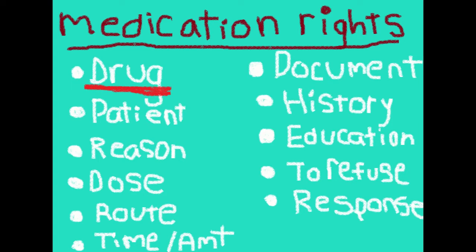The right patient. For EMTs, usually you just have one patient, but sometimes you might have more on scene. It's kind of easy to know that you have the right patient, but again there could be room for error — maybe if there's a lot of family on scene and you're not sure which one is the patient. So before you give it, you want to make sure you're giving it to the right person.